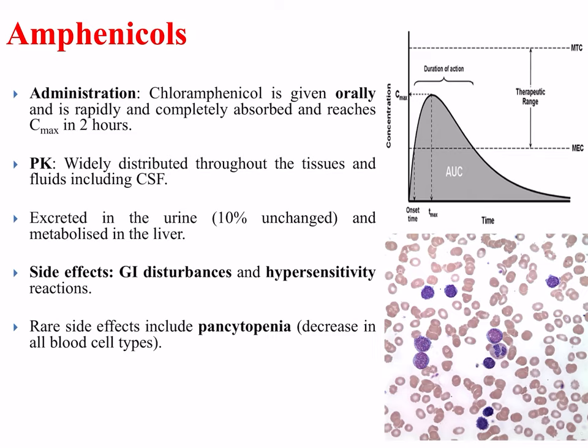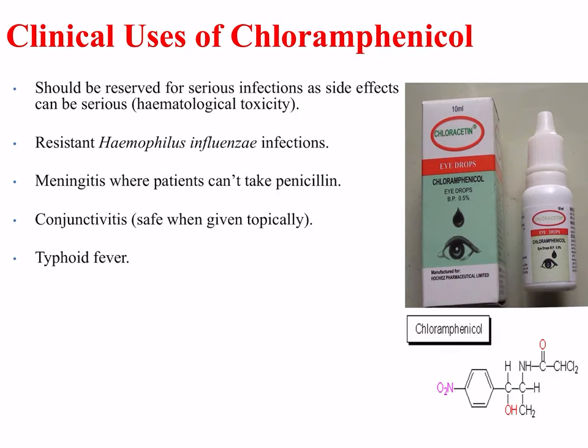Chloramphenicol is given orally and is rapidly and completely absorbed, reaching C-max in two hours. It is widely distributed throughout the tissues and fluids, including the CSF. It is excreted in the urine with 10% remaining unchanged, and is metabolized in the liver. Side effects include gastrointestinal disturbances and hypersensitivity reactions. A rare side effect includes pancytopenia, which is a decrease in all blood cell types, and therefore its use is restricted.